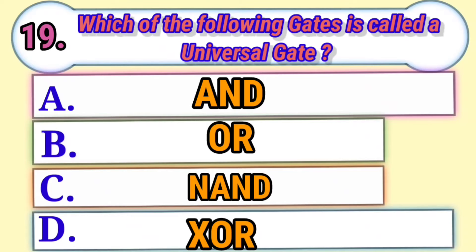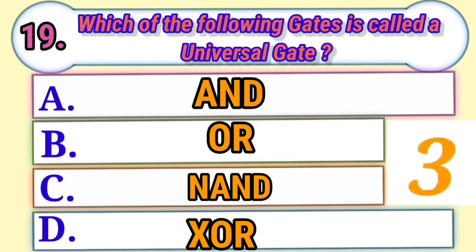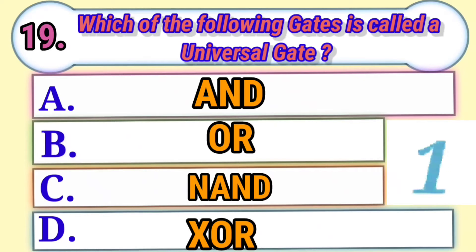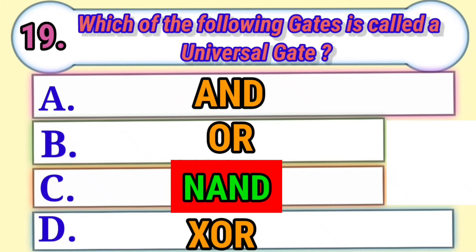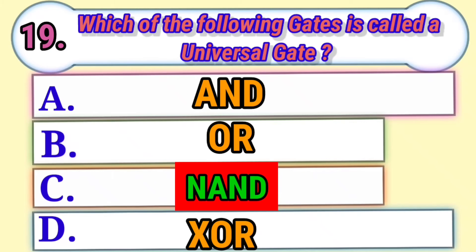Which of the following gates is called a universal gate? Answer: NAND gate.